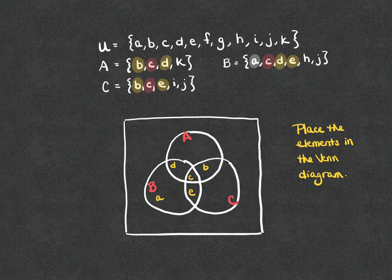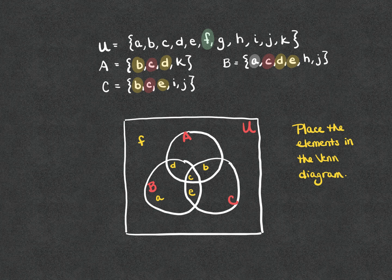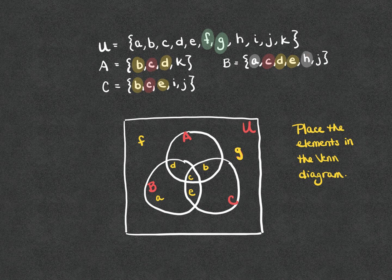Moving on to element F, I notice that F is not in any of the subsets A, B, or C, so F belongs outside in the universal set — and I'll go ahead and label the universal set now. Similarly, element G is not in any of the subsets, so G belongs outside as well. Element H is only in subset B and is not shared with any of the others, so H goes there. And I is only in subset C, so I'll put I there.